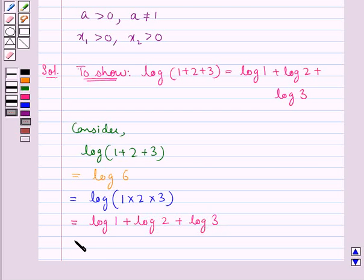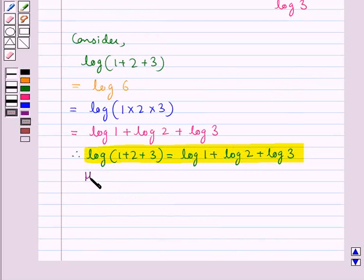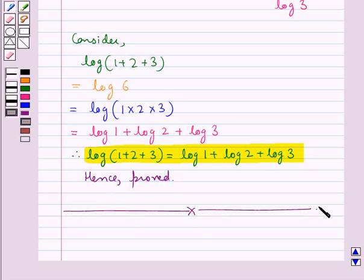That is, log(1+2+3) equals log 1 plus log 2 plus log 3, and this is what we were supposed to prove. Hence proved. This completes the session. Hope you have understood the solution to this question.